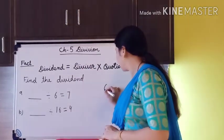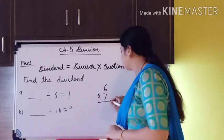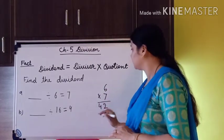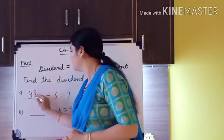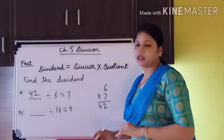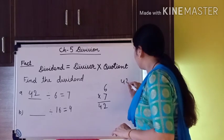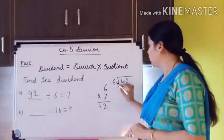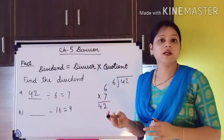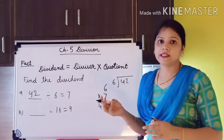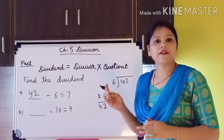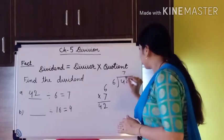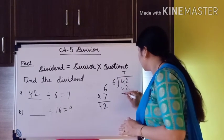So here, 6 multiplied by 7 — 7 sixes are 42. We write 42 as the dividend. To verify: write 42 and divide by 6. Checking the table of 6: 6 ones are 6, 6 twos are 12, 6 threes are 18, 6 fours are 24, 6 fives are 30, 6 sevens are 42. So 42 divided by 6 gives 7, confirming the answer.